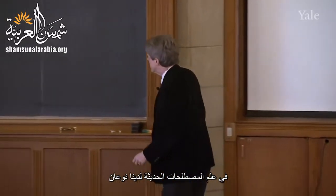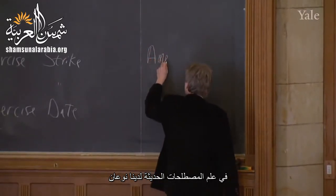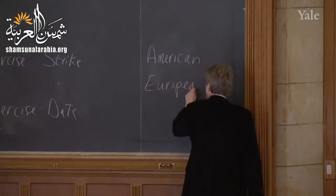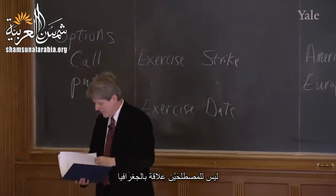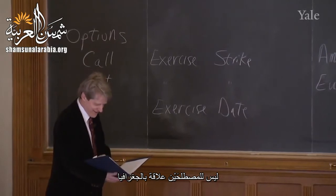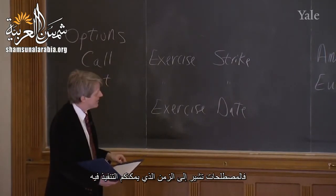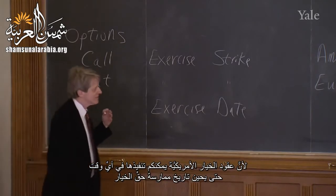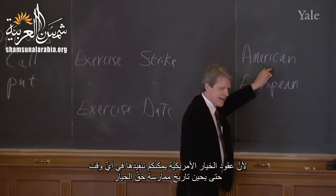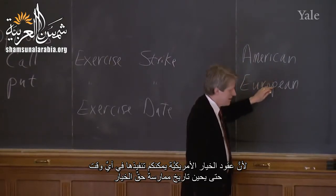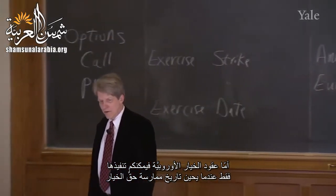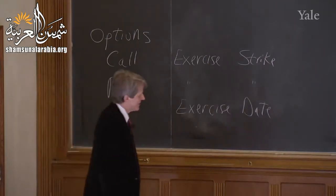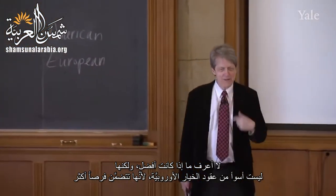In modern terminology, we have two kinds: American and European. It doesn't refer to geography — the terms refer to when you can exercise. The American option can be exercised at any time until the exercise date, whereas a European option can only be exercised on the exercise date. The American option is better, or at least not worse, than a European option, because you have more options.